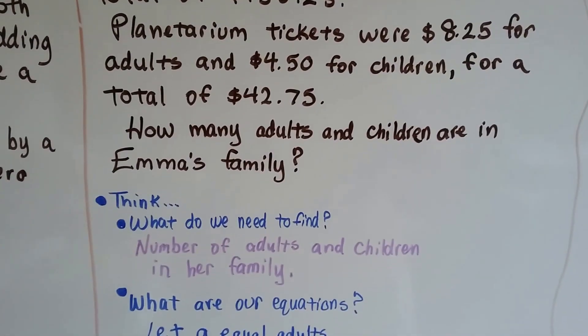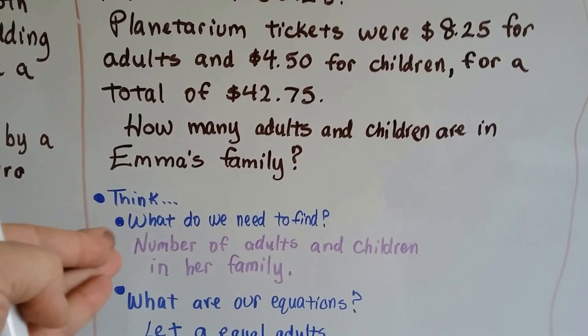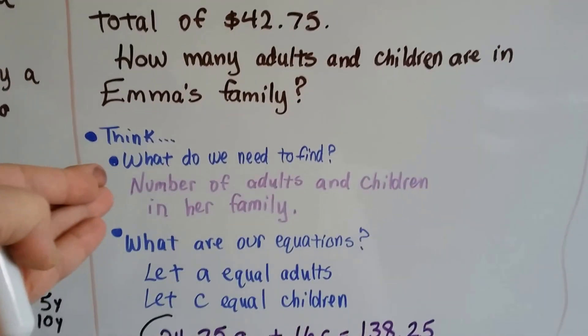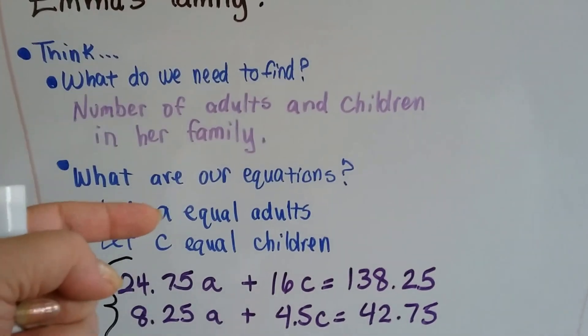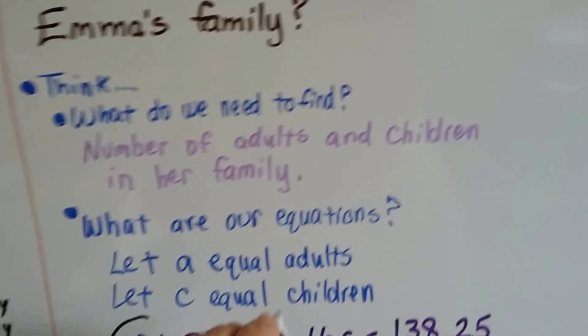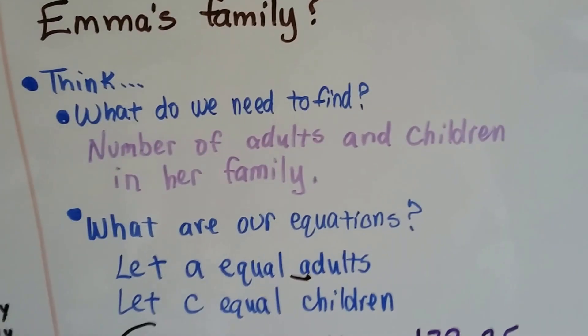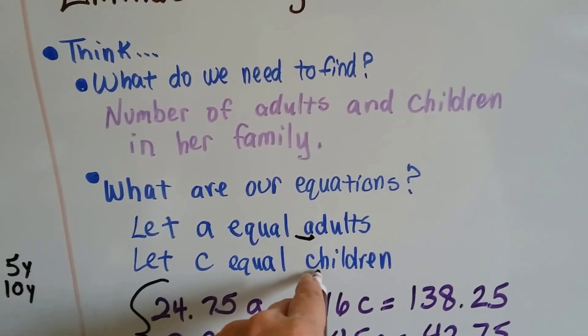So think, what do we need to find? We need to find the number of adults and children in her family. What are our equations? We're going to let A equal adults and let C equal the children.